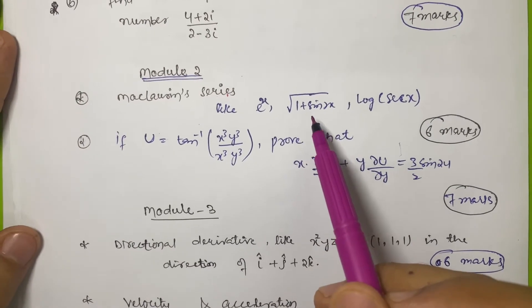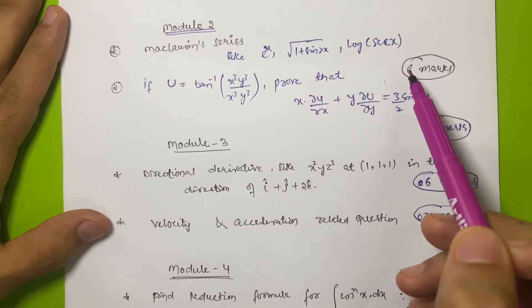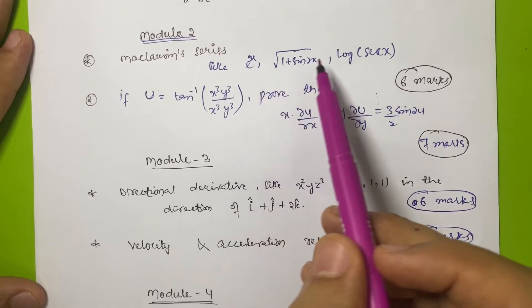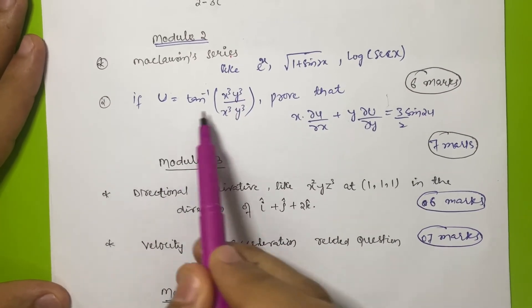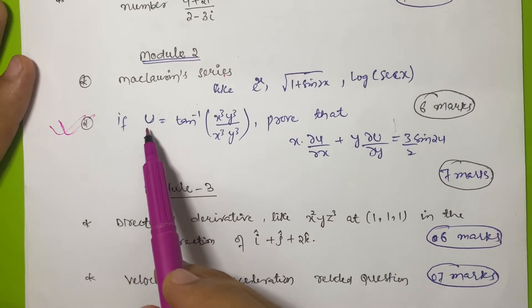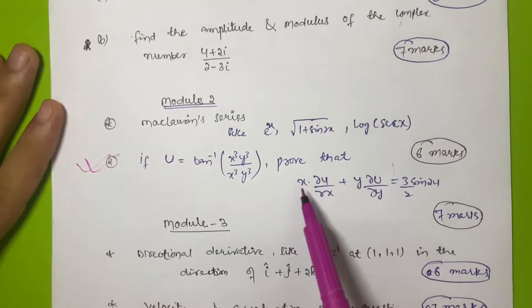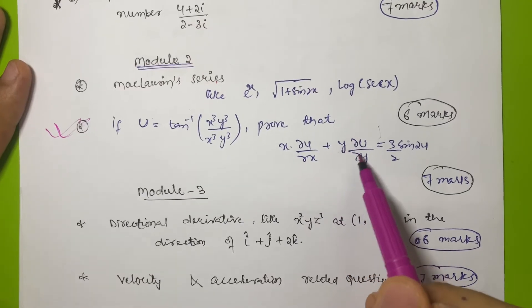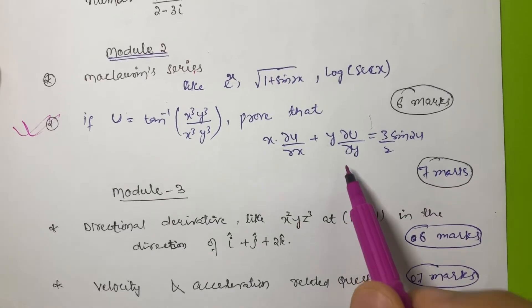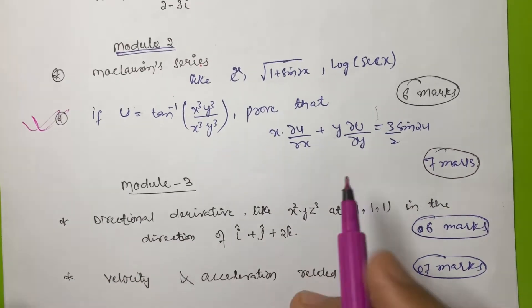These are also simple questions with solutions of four or five lines. You should refer to AZ notes as I mentioned in a previous video. There is also a definite question from this module: if u = tan⁻¹(x³y³ / (x³ + y³)), you have to prove that x(∂u/∂x) + y(∂u/∂y) = (3/2)sin(2u). This carries 7 marks and is a definite question in the exam based on previous papers.